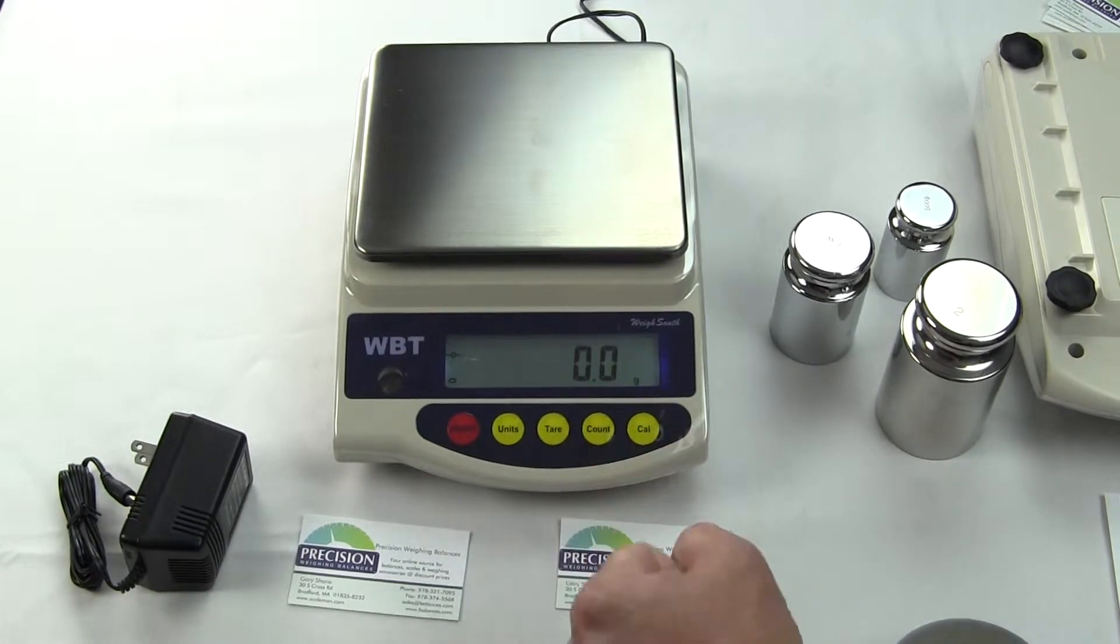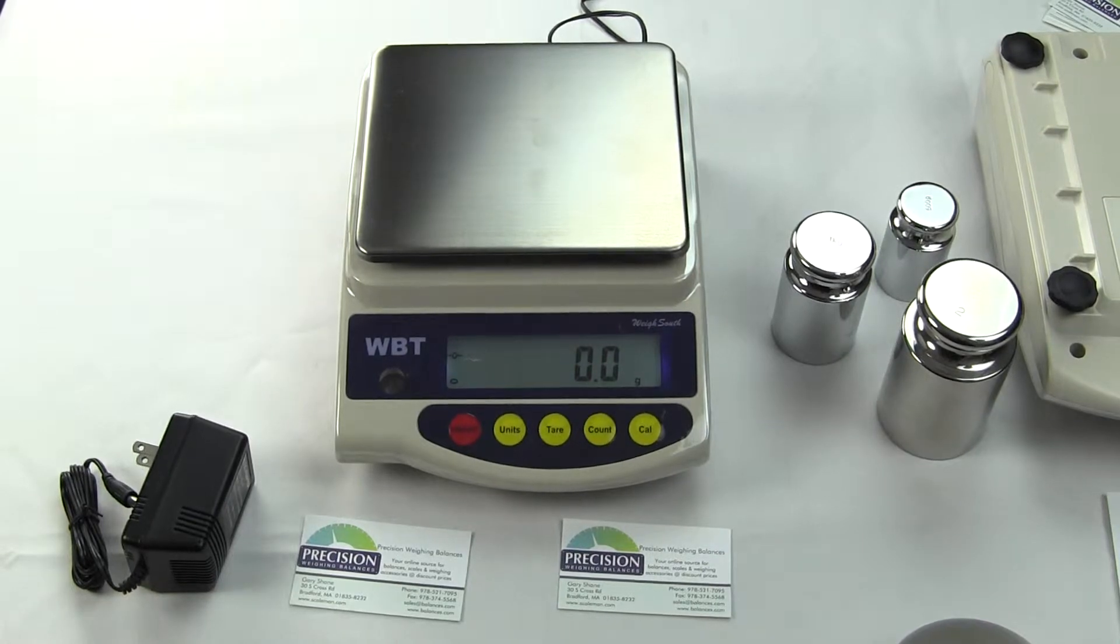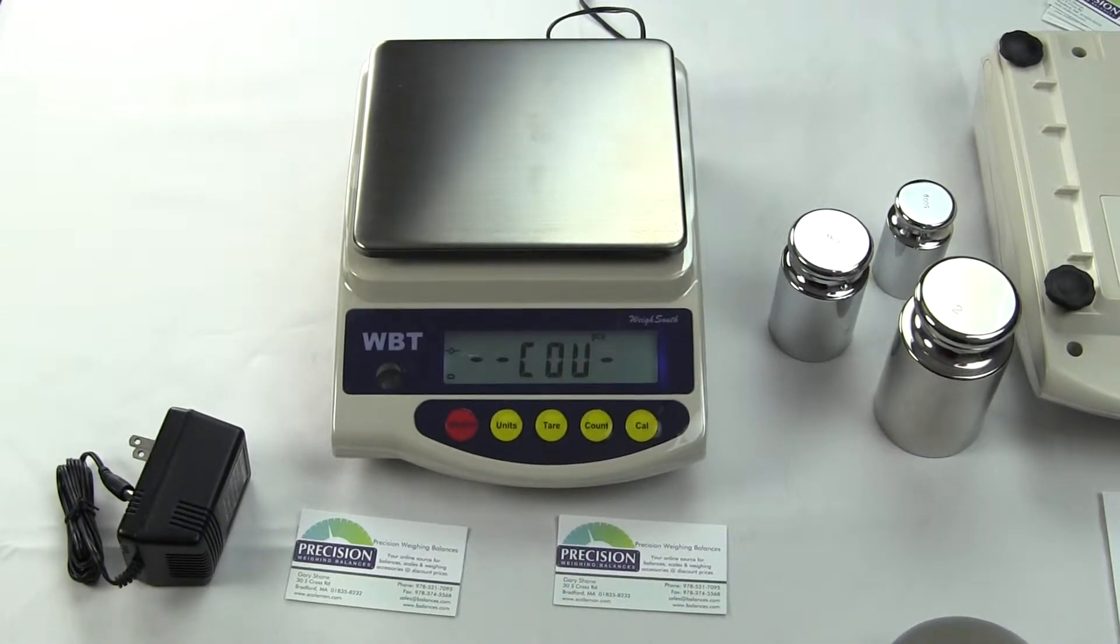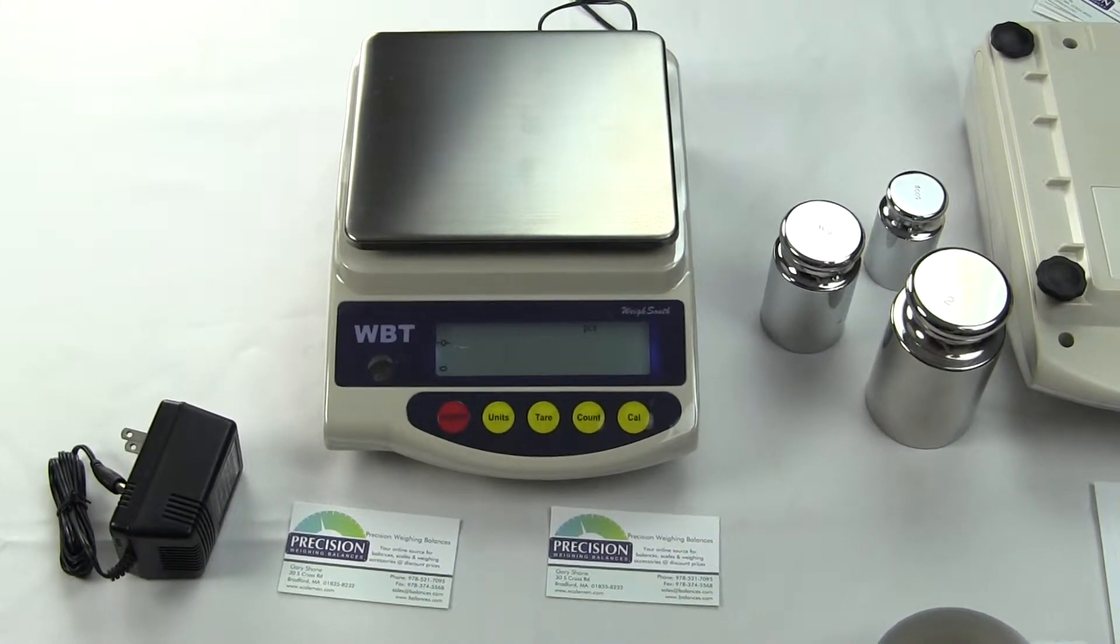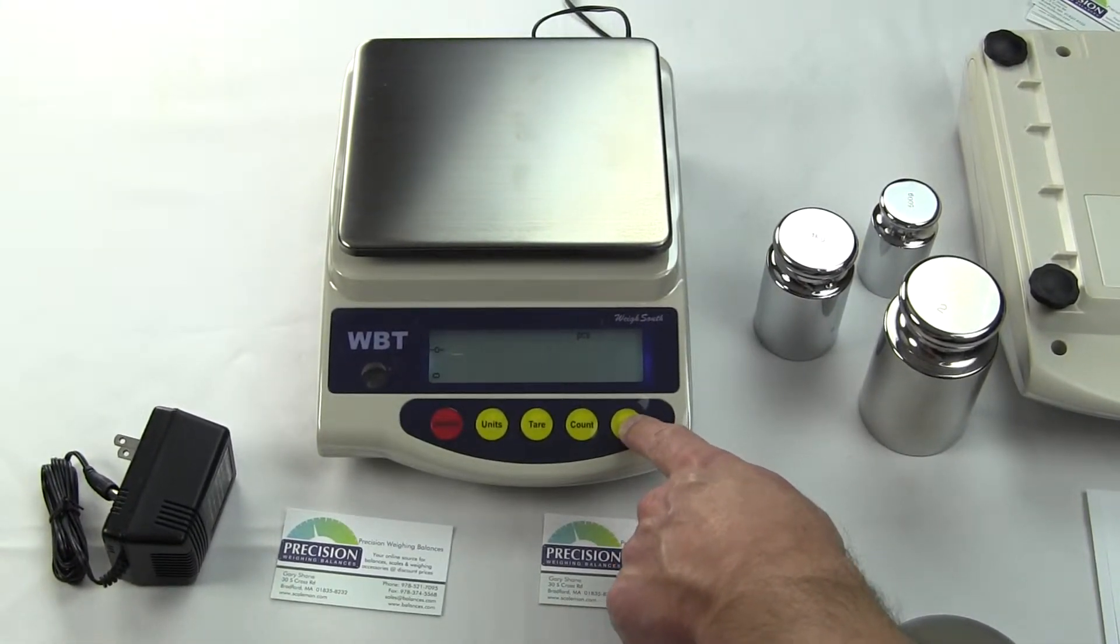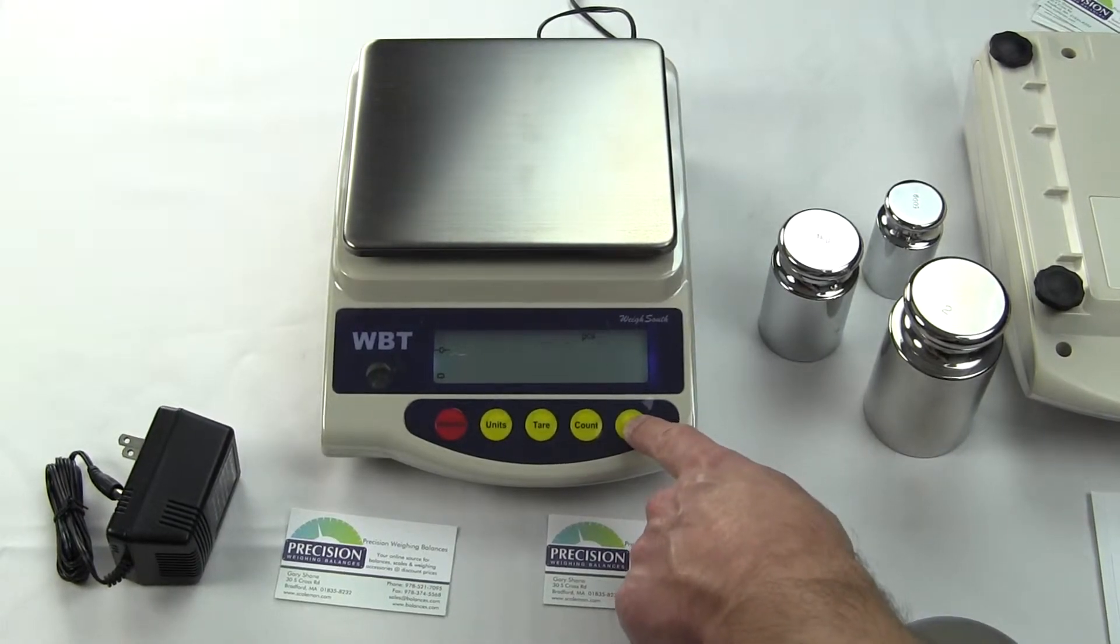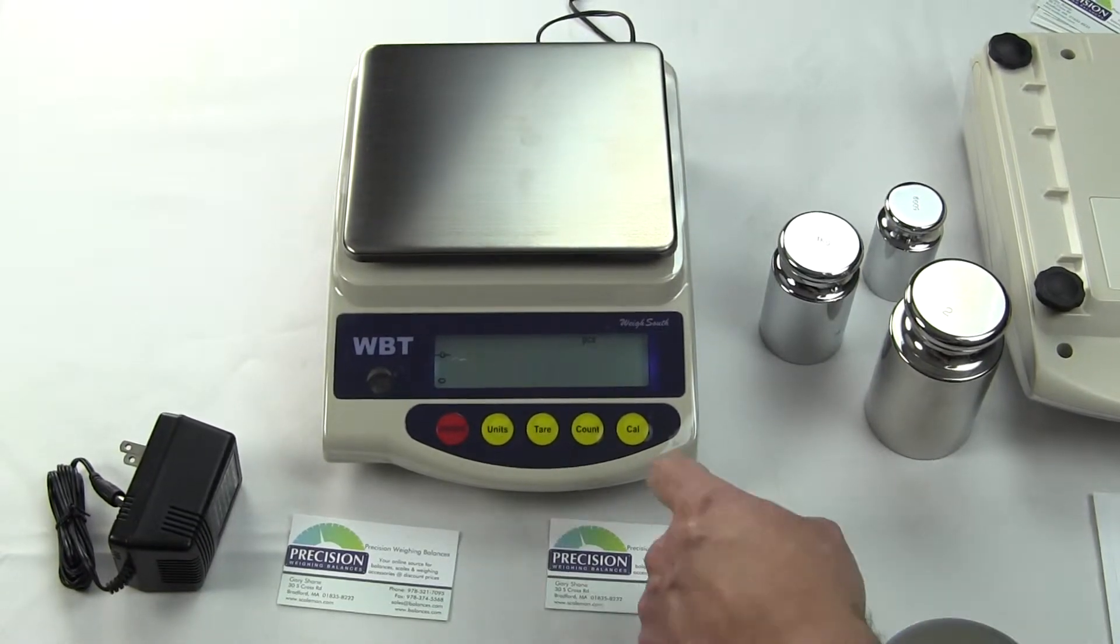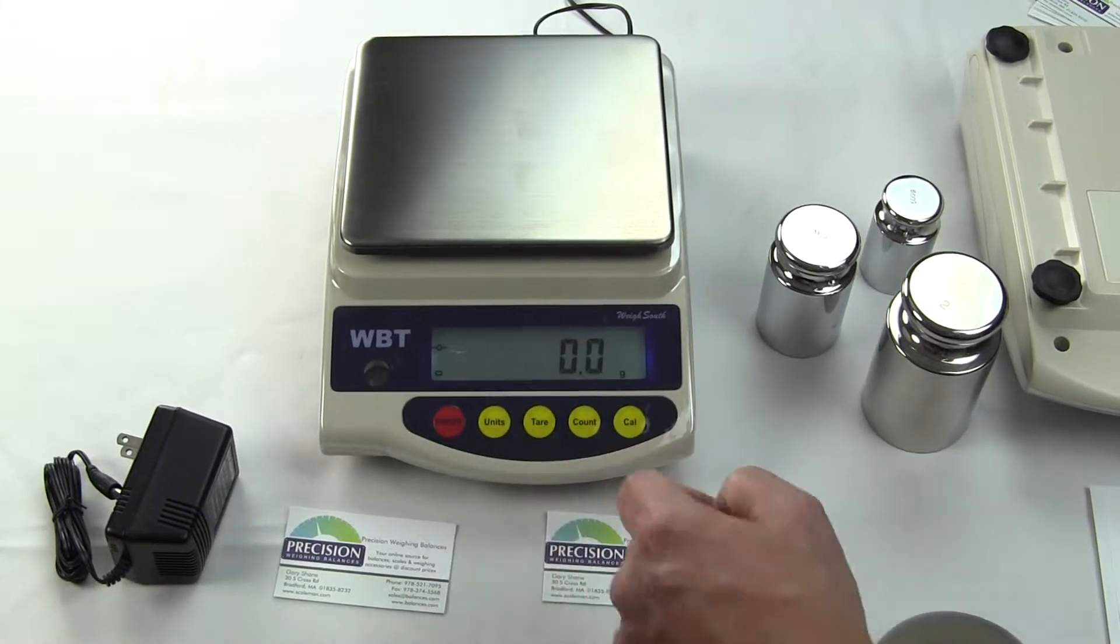For the parts counting mode, you do have multiple sample sizes. To get out of parts counting mode we just hit count again. If you press the cal button you can scroll through. You have 10, 20, 50, 100, 150, 200, 250, 500. The bigger sample size, the better the count will be for you. To get out of the count mode just press the count key.